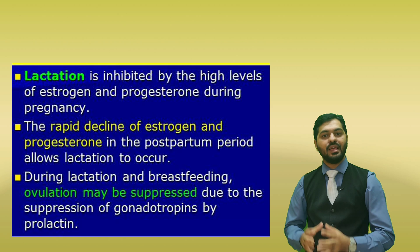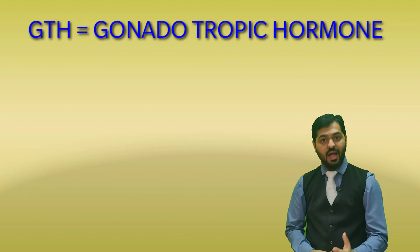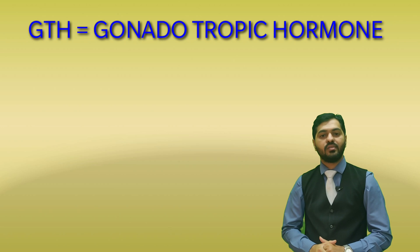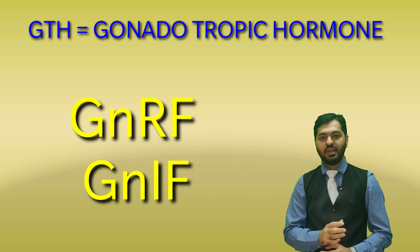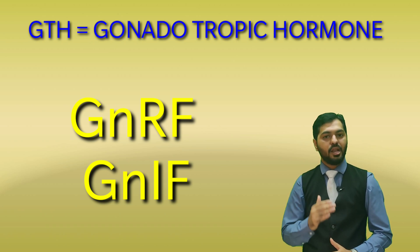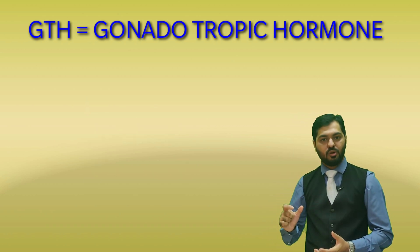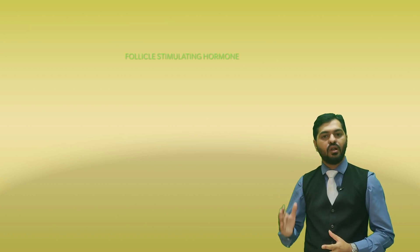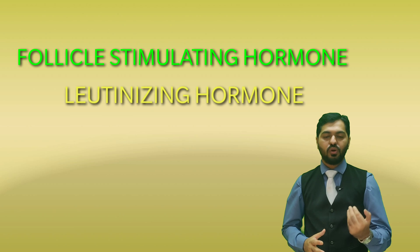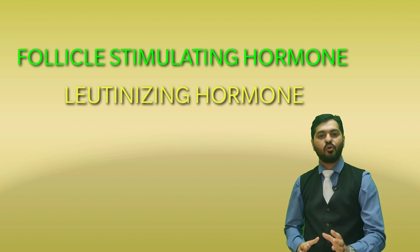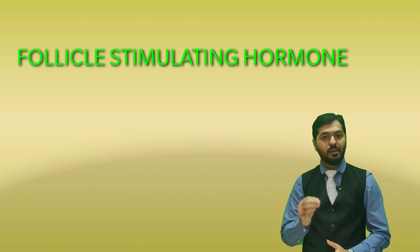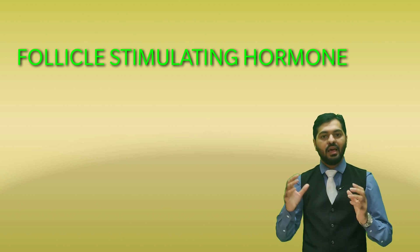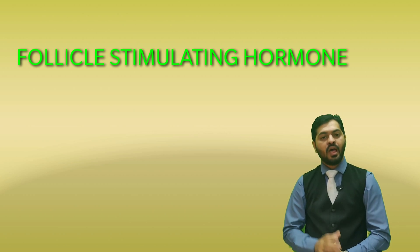The next hormone is GTH — the gonadotropic hormone — which actually consists of two major hormones controlled by the hypothalamic hormones GNRF and GNIF, the gonadotropin releasing and inhibiting factors. The first part is FSH — Follicle Stimulating Hormone — and the second is LH — Luteinizing Hormone. Both hormones act on the gonads: in males, the testes, and in females, the ovaries. In males, FSH stimulates the cuboidal germinal epithelial cells lining the seminiferous tubules, causing spermatogenesis and formation of mature sperm cells.